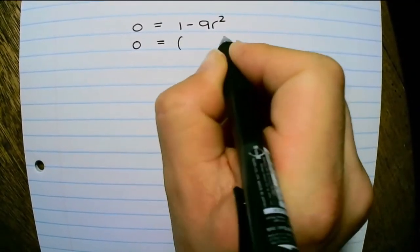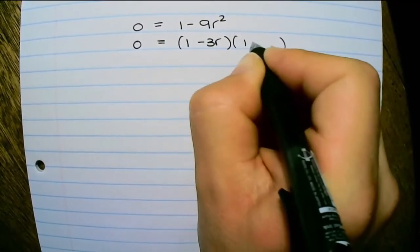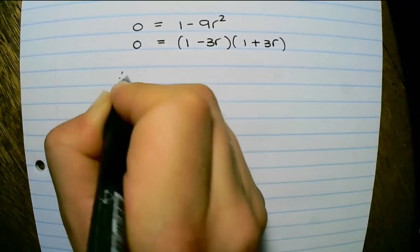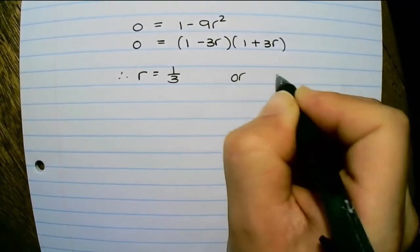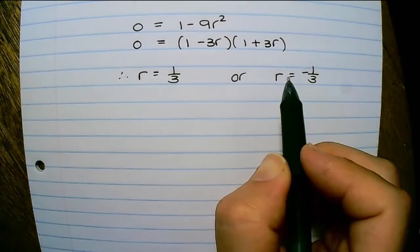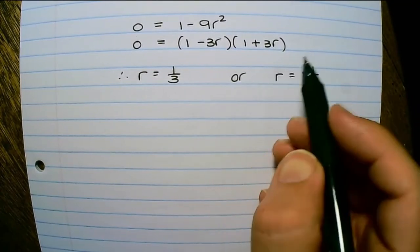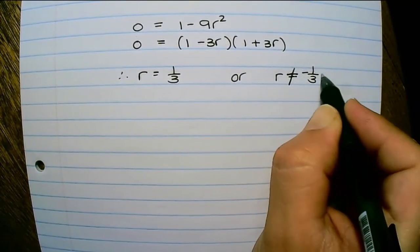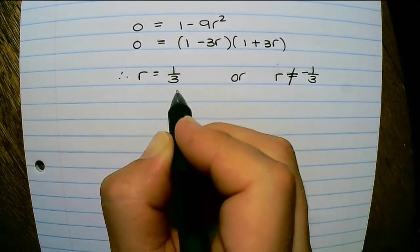Then I can factorize, because that's a difference of two squares. And therefore, r equals one third or r equals negative one third. But the sum to infinity is two and a quarter, so the negative ratio would not be valid. So we know that r equals one third.